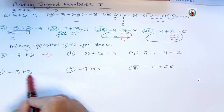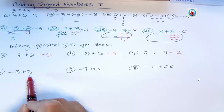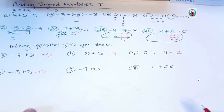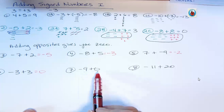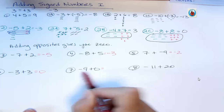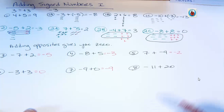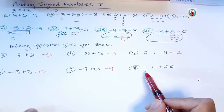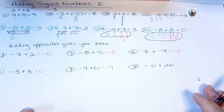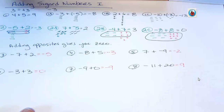For number six, negative three and positive three are opposites, so you get zero. For number seven, negative nine plus zero — zero isn't negative or positive, so the answer is still negative nine. For number eight, you have more positives by nine, so the answer is positive nine. That's a very basic introduction to adding signed numbers. We'll go back through these in the second video and then do some that are a little harder.